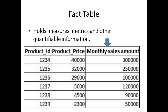I am going to show you how to query monthly sales. The SQL statement is: SELECT product name, monthly sales amount FROM fact table JOIN dimension table ON dimension table dot product ID equal to fact table dot product ID. This gives you the product name and monthly sales amount result.